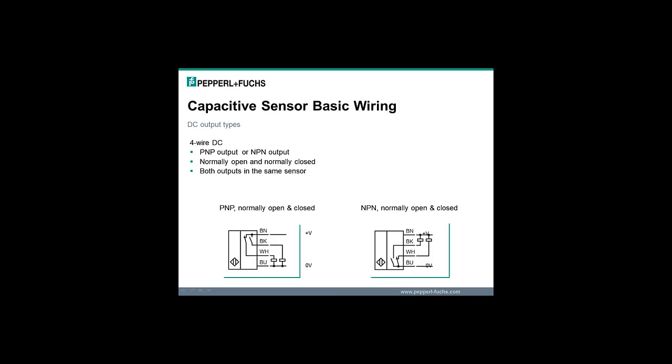As we can see from the slide, 4-wire DC sensors offer the same output as the 3-wire sensors, but the 4-wire sensors include both output states in the same sensor package. Note that the models include both the normally open and normally closed outputs. This gives the customer the ability to select one sensor model and use the output state that is appropriate for the application.